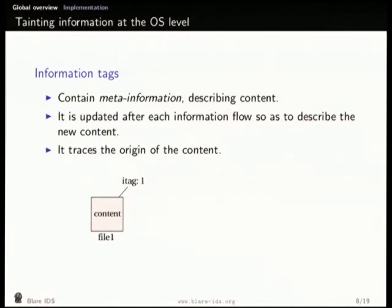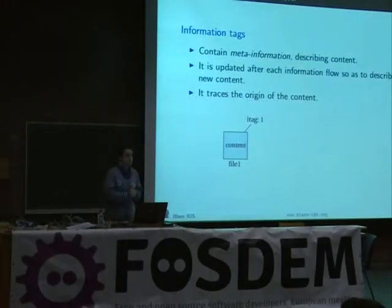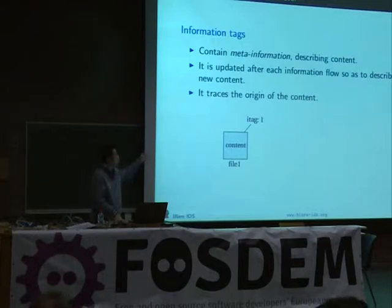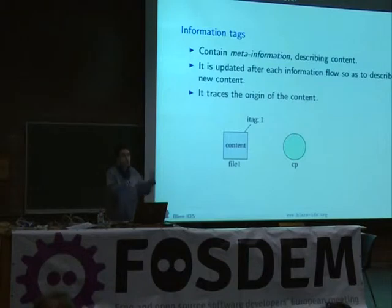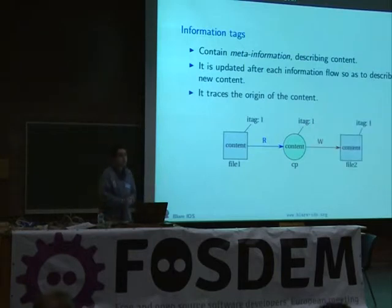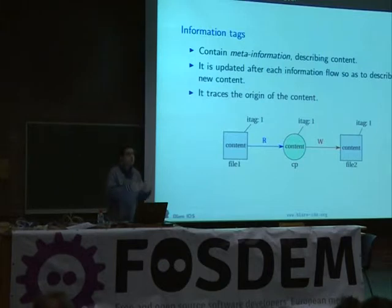We have two types of tags. The first is an information tag — a colored tag that contains metadata about the information inside the file. We update this tag each time there's an information flow. For example, if we have a file with content tagged type one, and we copy that file, a copy process is created, it reads the content and becomes tagged with one, and when it writes to the new file, that new file is also tagged one. This means we can trace the origin of the content.